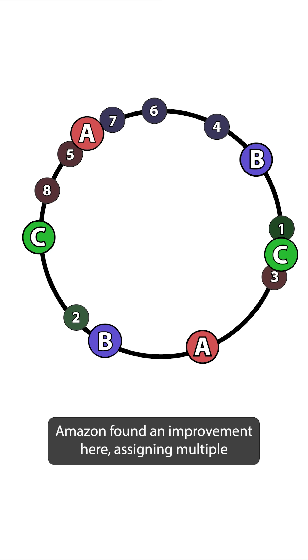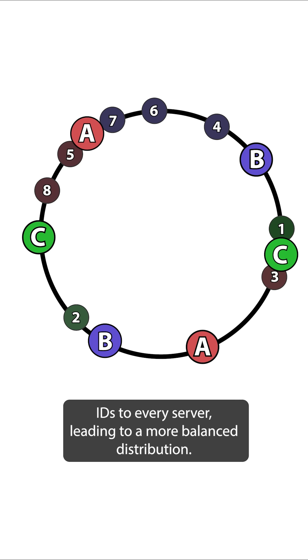Amazon found an improvement here, assigning multiple IDs to every server, leading to a more balanced distribution.